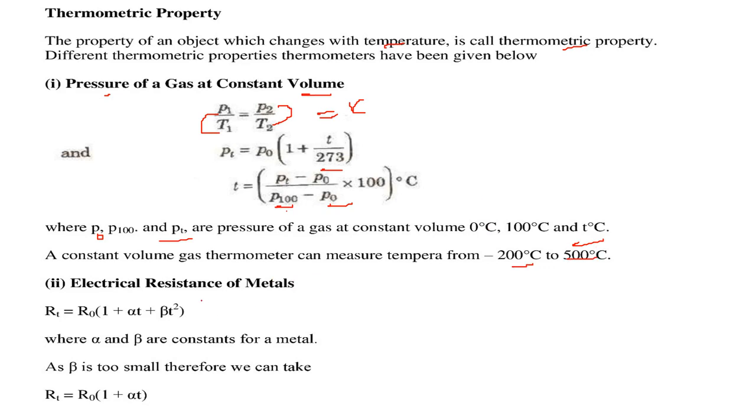Well, then we have electrical resistance of metals, this is also one of the thermometric property. So RT equal to R0, 1 plus alpha T, beta T square. So this alpha and beta are the constants for a metal.